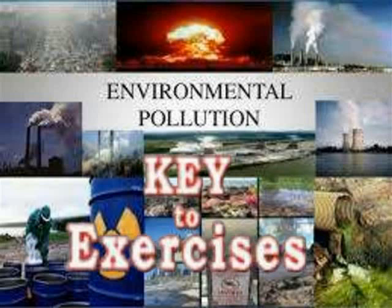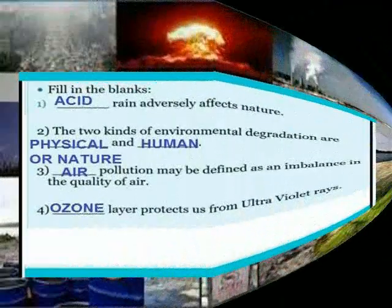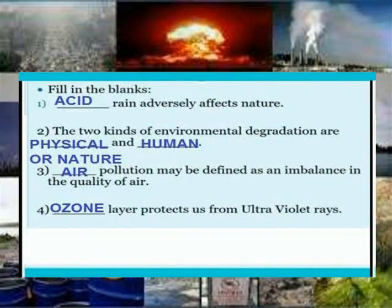5th grade social lesson 11, environmental pollution, fill in the blanks. Acid rain adversely affects nature. The two kinds of environmental degradation are physical or natural and human. Air pollution may be defined as an imbalance in the quality of air.